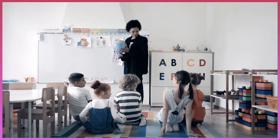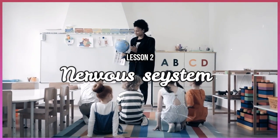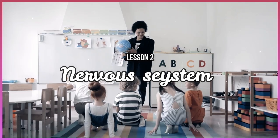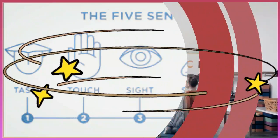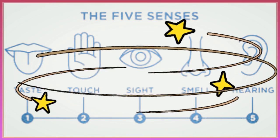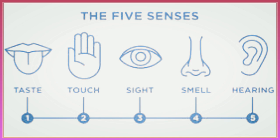How do humans use their senses to gather information from their surroundings? You know from the previous lessons that the body consists of different systems that manage its functions. And that humans have five basic senses: taste, touch, sight, smell, and hearing.